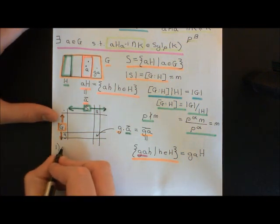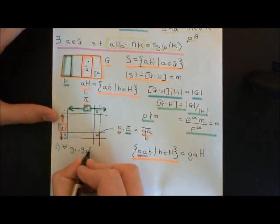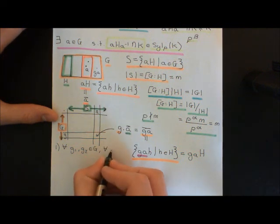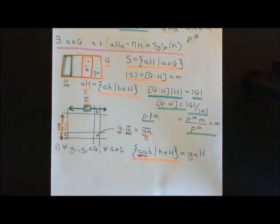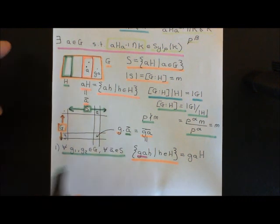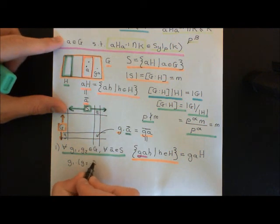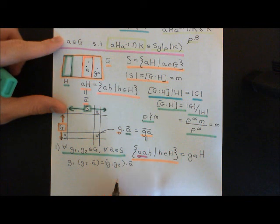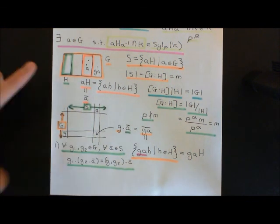Axiom number one says that for all g1, g2 in G and for all left cosets ā in S, it must be the case that g1 · (g2 · ā) equals (g1∘g2) · ā. So how are we going to prove that? We apply the definition directly.